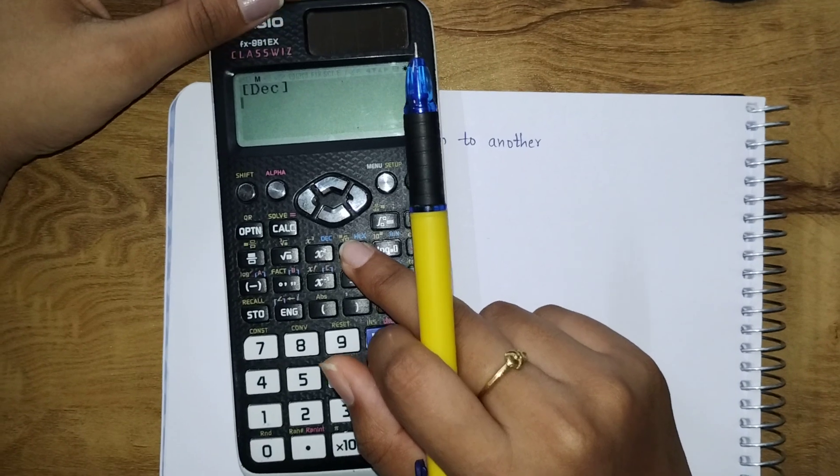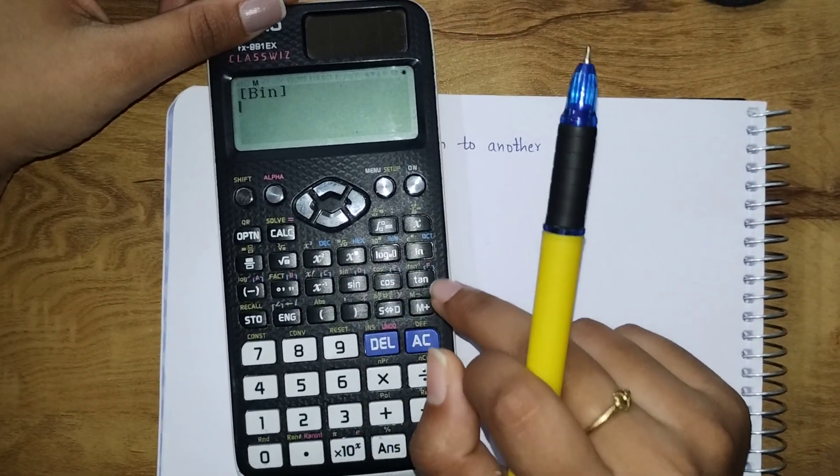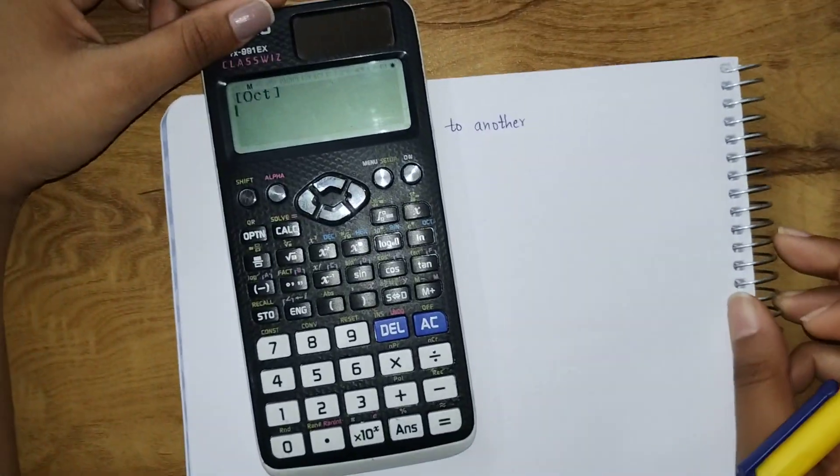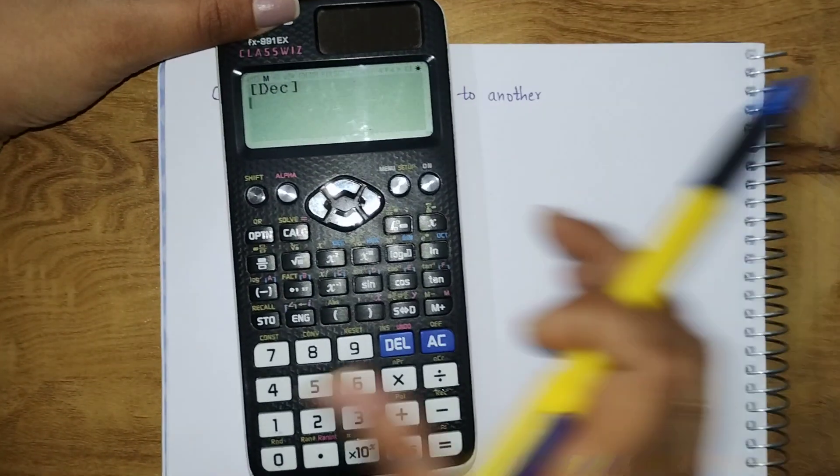If you want hexadecimal, click on this hexa. Go to binary, click on this, or if you want octal, then this. Now go back to decimal.